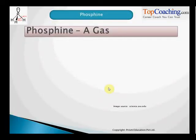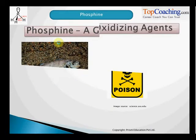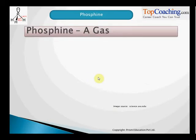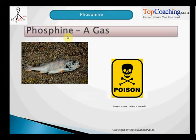Phosphine, as the name suggests, is a phosphorus compound with the chemical formula PH3. It is gaseous in nature, has a smell like rotten fish, and is poisonous in nature.